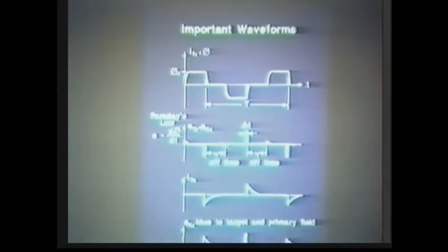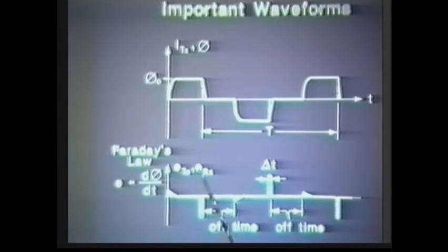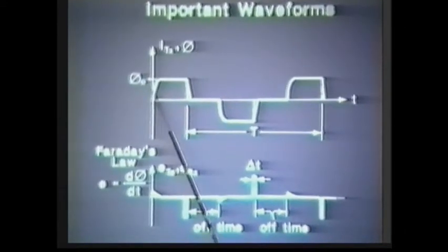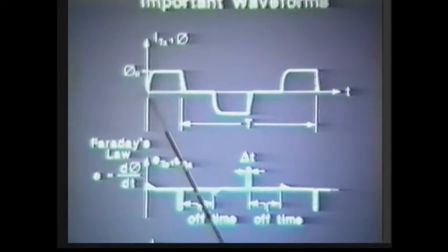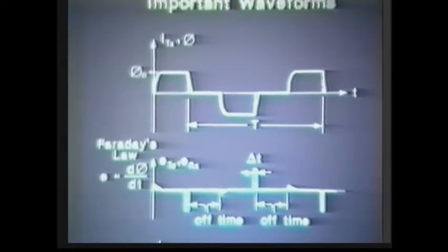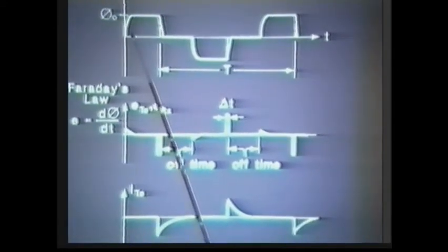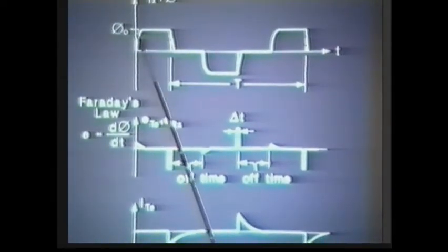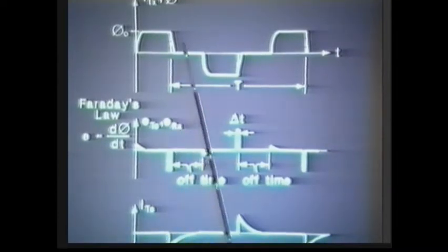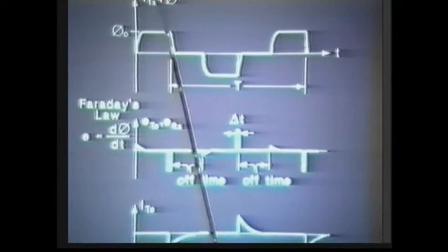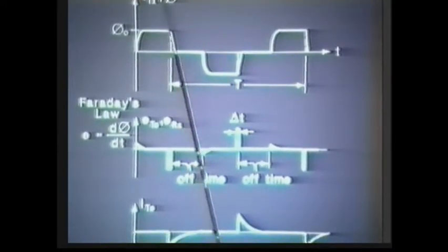This is the important waveform slide. The uppermost section shows the primary current — the transmitter current waveform as a function of time. It's periodic, with period T. There are two parts of interest: the turn-on time, which is usually exponential, and the turn-off time, which is usually a ramp, as Alex pointed out earlier. The flux linking the target shows exactly the same time behavior as the current in the transmitter.